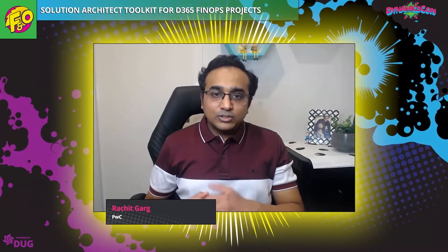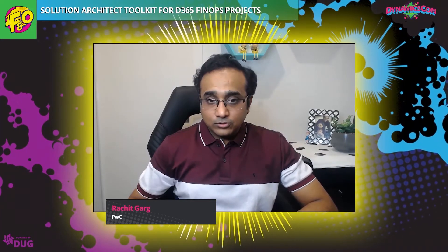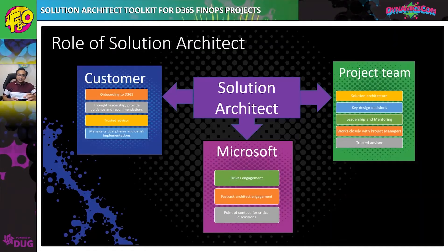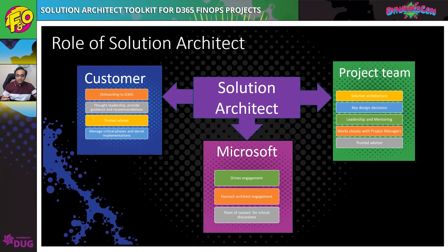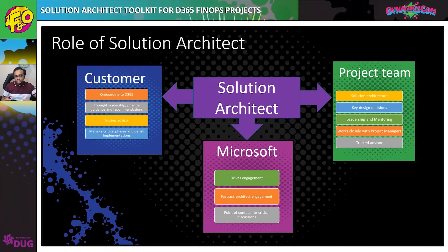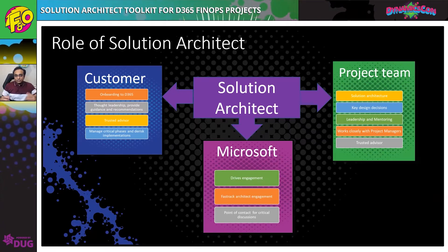To the project implementation team, the solution architect is the go-to person for any critical issues or key design decisions, and provides leadership and mentoring to the team. He also works closely with project managers to do forward planning and call out critical things that need to be taken care of. As you can see, the solution architect plays a very key role as the trusted advisor for all major parties involved in any implementation project.